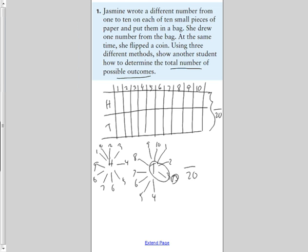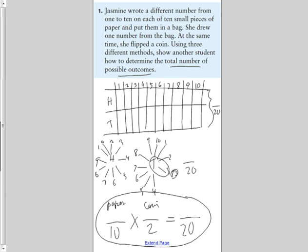The grade 8 connection is that if you take event number one, which is the paper, which has 10 possible outcomes, and you take your coin, which has two possible outcomes, the product of each outcome, the product of those, will yield your possible outcomes, which in this case is 20. So the real connection is if you want to calculate how many possible outcomes there are, simply multiply the number of possible outcomes for each event and multiply them together. You get your total possible outcomes.